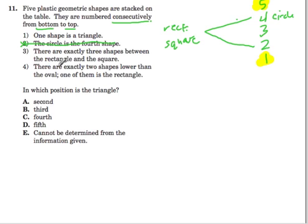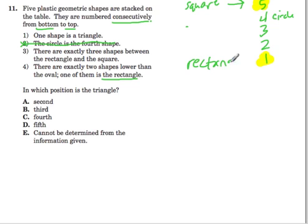There are exactly two shapes lower than the oval, and one of them is the rectangle. So if the rectangle and the square are at the bottom and top, and we know the rectangle is below the oval, the rectangle can't be on top. If it was on top, the rectangle wouldn't be below anything. So what's up here? This has to be the square. Because we know the rectangle is below some objects, the rectangle has to be on the bottom. Because the rectangle and square occupy the top and bottom spaces with three shapes in between.